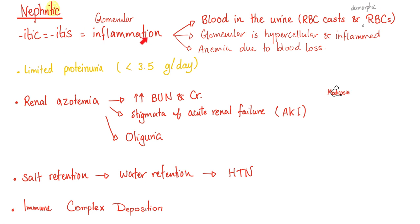Nephritic syndrome — 'itis,' inflammation. Your glomeruli are inflamed and they are bleeding. How do you know the blood is coming from the kidney itself and not from the ureter, urinary bladder, or urethra? Because you will see red blood cell casts and dysmorphic red blood cells in the urine. When you see both, you know it's coming from the kidney for sure. It's hypercellular and inflamed glomeruli. There is also limited proteinuria — way less than in nephrotic syndrome.